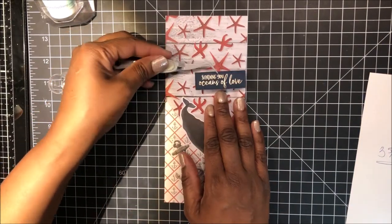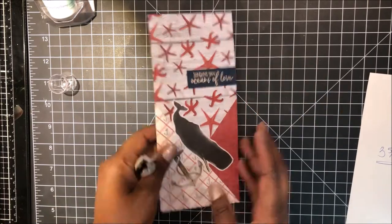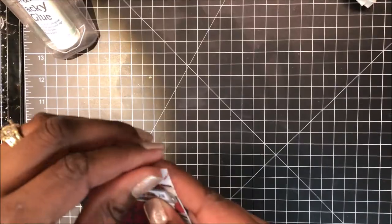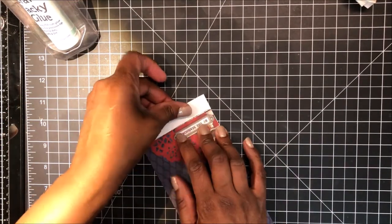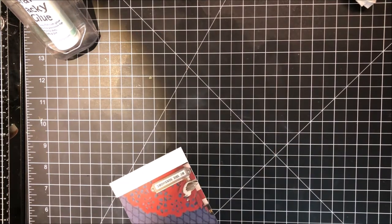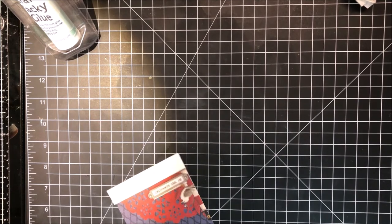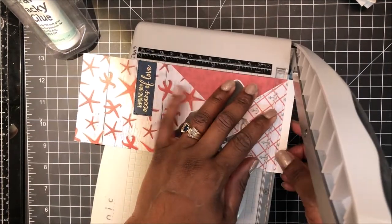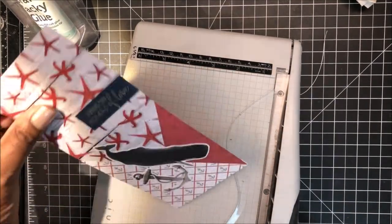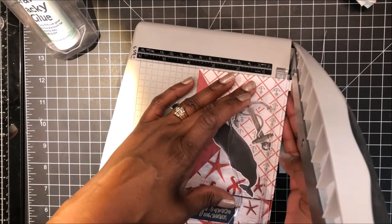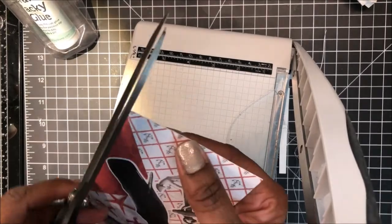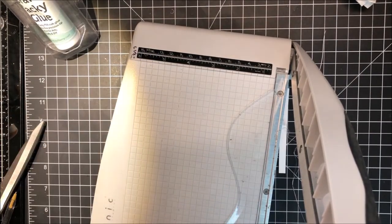Use my mono sand eraser to get some bits of stray embossing powder off of my sentiment strip. And here I'm bringing in just a scrap piece of paper to affix to the back side of my panel, just at the bottom where my pattern paper, where there was a gap between the end of my pattern paper and the end of my focal panel. So that builds it up to the same depth along the full panel. And then I'm just trimming that excess off.